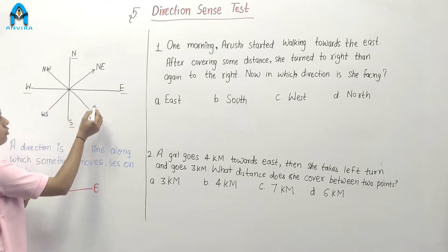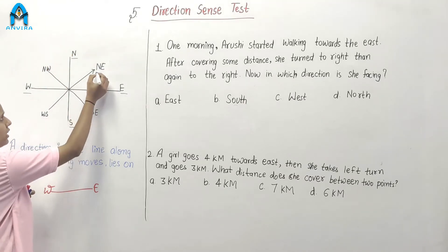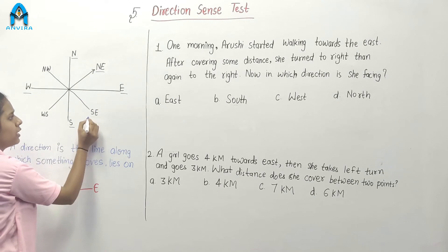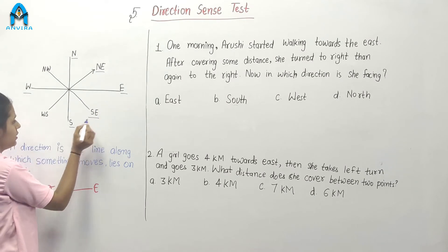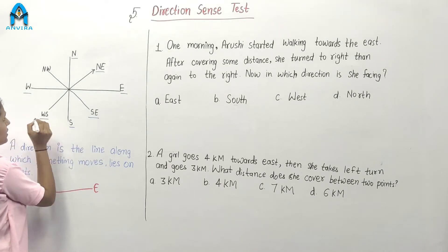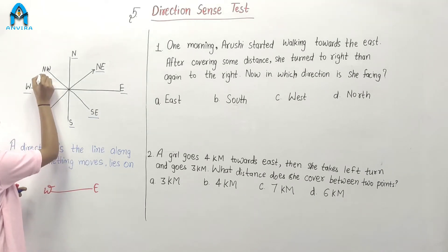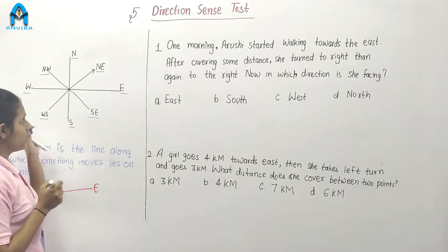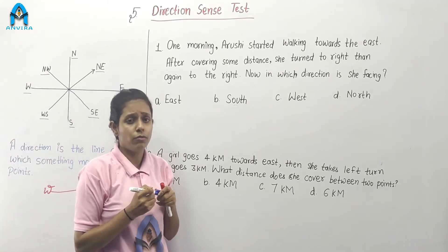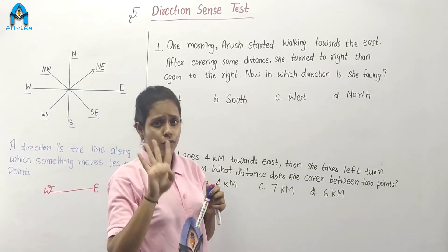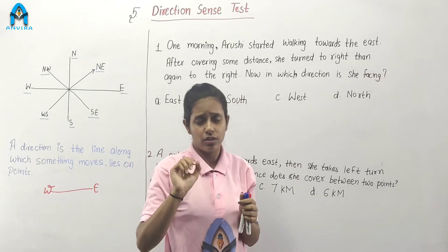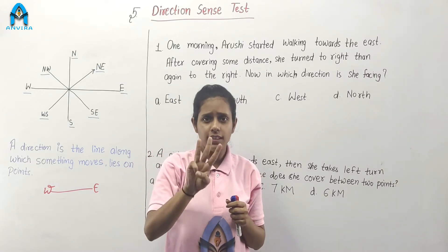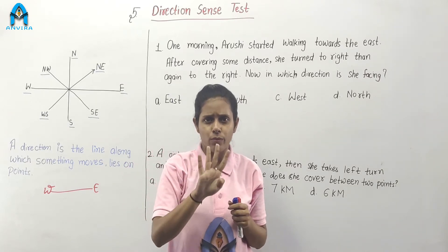Now, we know about many more directions: northeast, southeast, southwest and northwest. But mainly we have four directions — north, south, east and west.